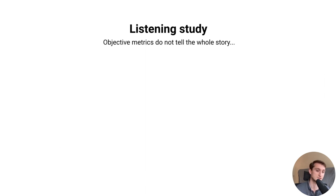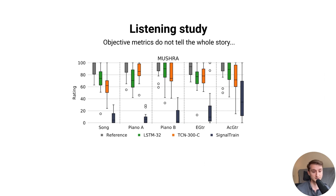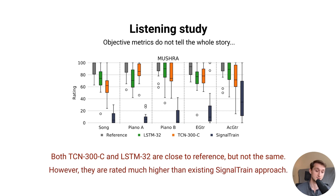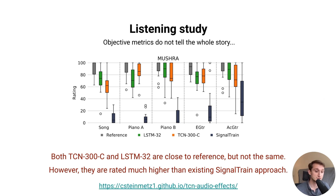Since objective metrics don't tell the whole story, we performed a perceptual listening study with 18 participants using a MUSHRA-like design, where listeners rated the similarity of different models to the reference recording from the real analog LA-2A. The TCN and LSTM performed close to the reference but were still statistically distinguishable by listeners, though in some cases listeners couldn't differentiate, as seen in the large variance of reference ratings. Clearly, however, our TCN and LSTM models strongly outperformed the SignalTrain approach due to the heavy artifacts in those recordings. Listening examples are available on the project website.